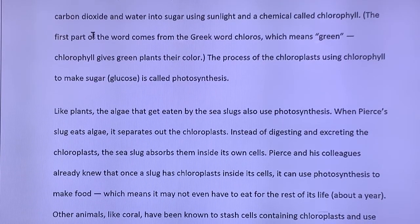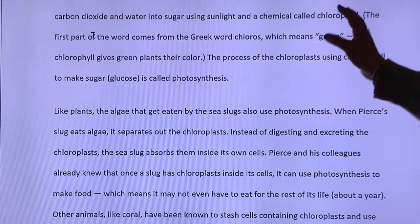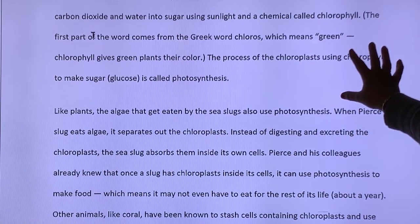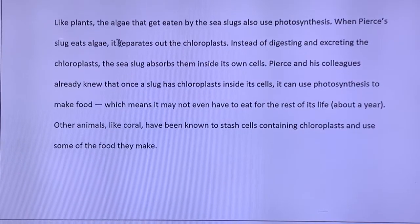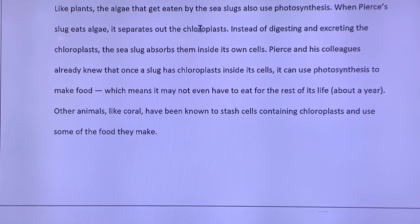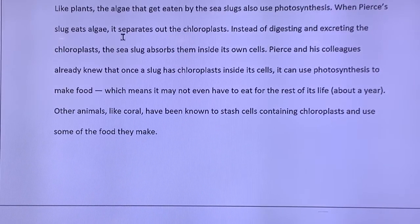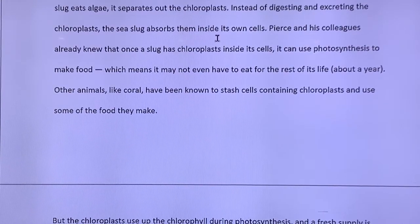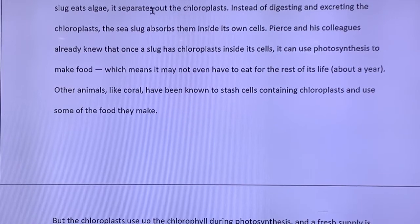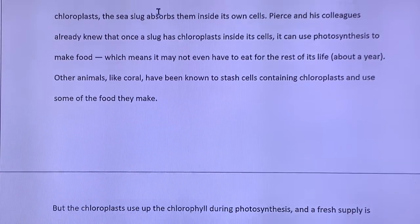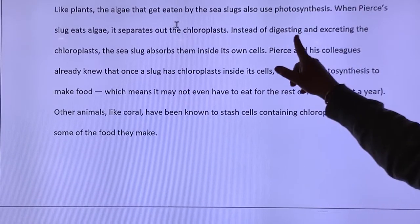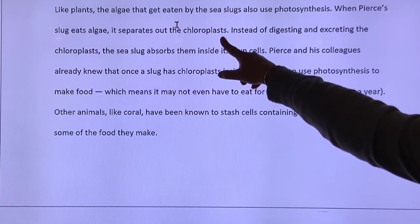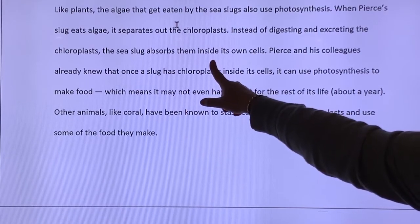Inside their cells, plants have tiny structures called chloroplasts. These chloroplasts turn carbon dioxide of water into sugar using sunlight. Important again, because there's anything now backing up that this animal can do photosynthesis. Like plants, the algae that get eaten by the sea slugs also use photosynthesis. When pierces slugs eat algae, it separates out the chloroplasts. Instead of digesting and excreting the chloroplasts, the sea slug absorbs them inside their own cells. So really we've talked about the fact that chloroplasts, where the chlorophyll is, these sea slugs separate the chloroplasts from their food and absorb them into their body. Interesting and important.